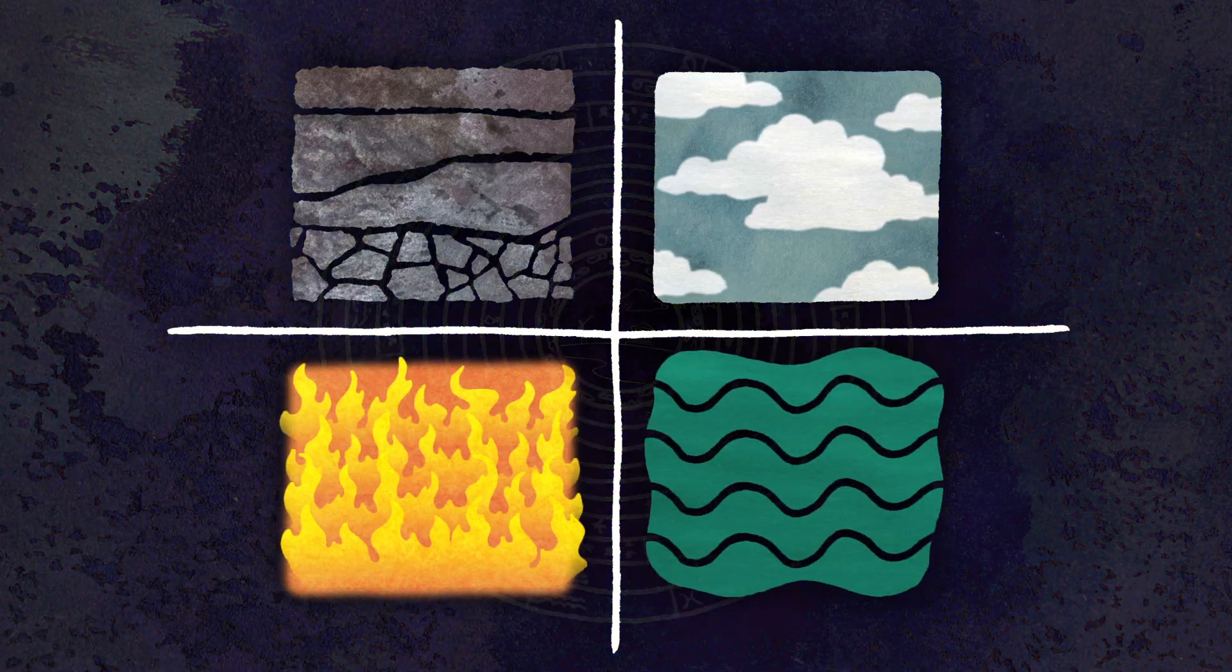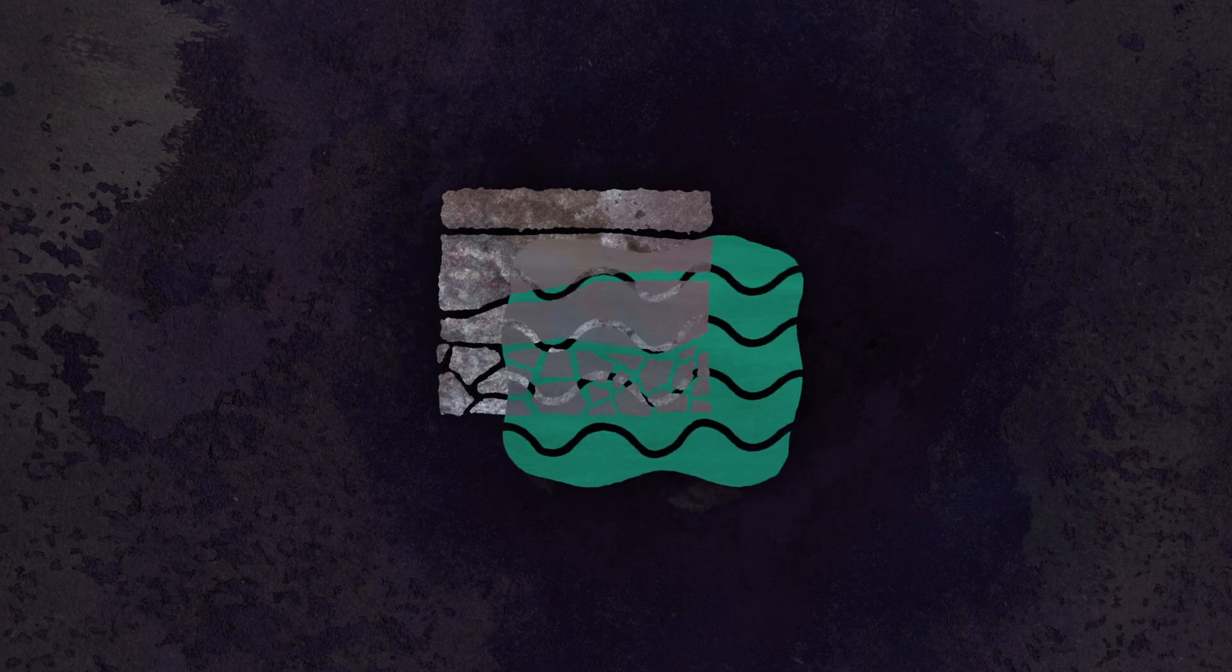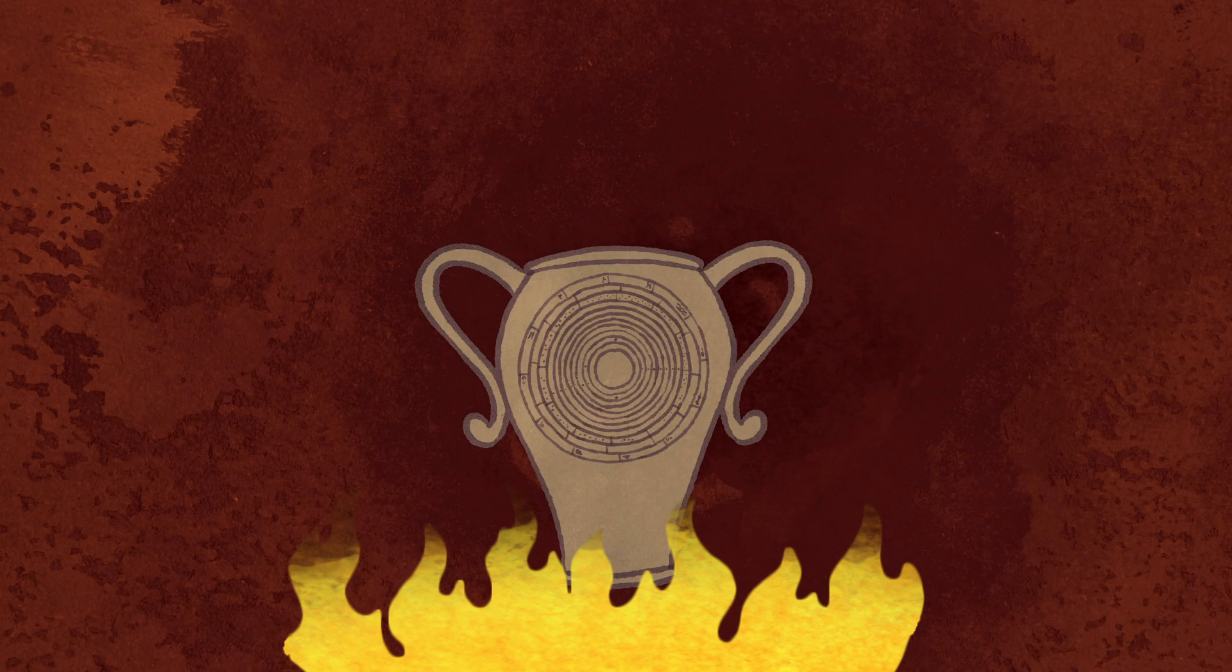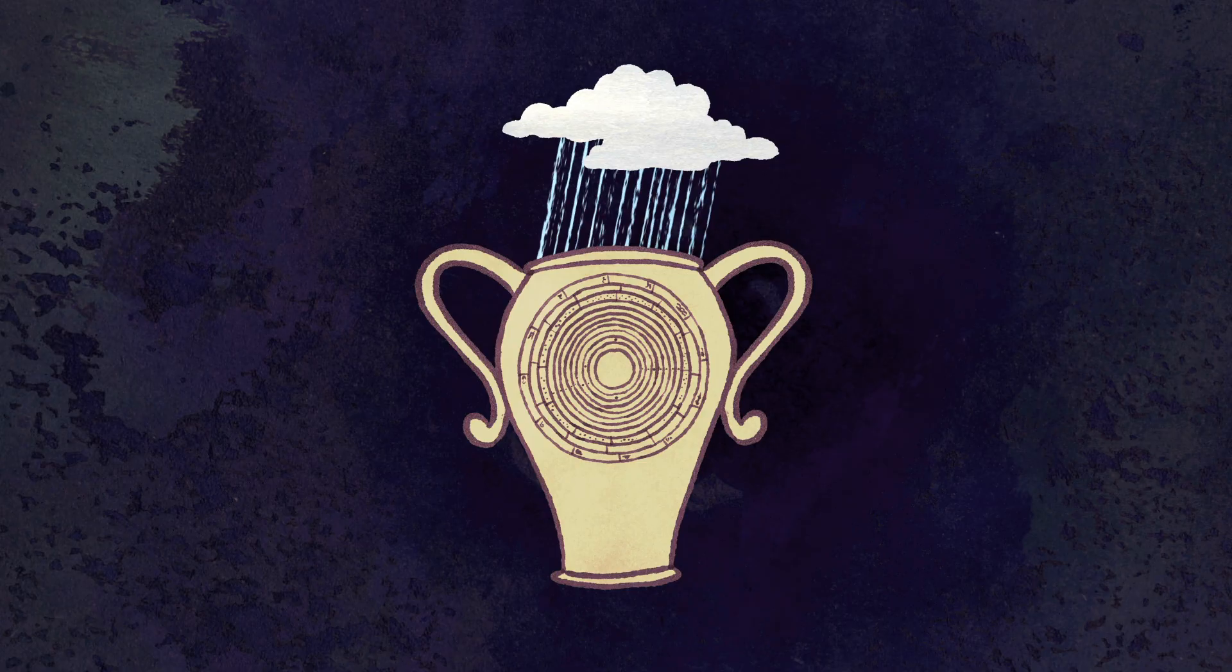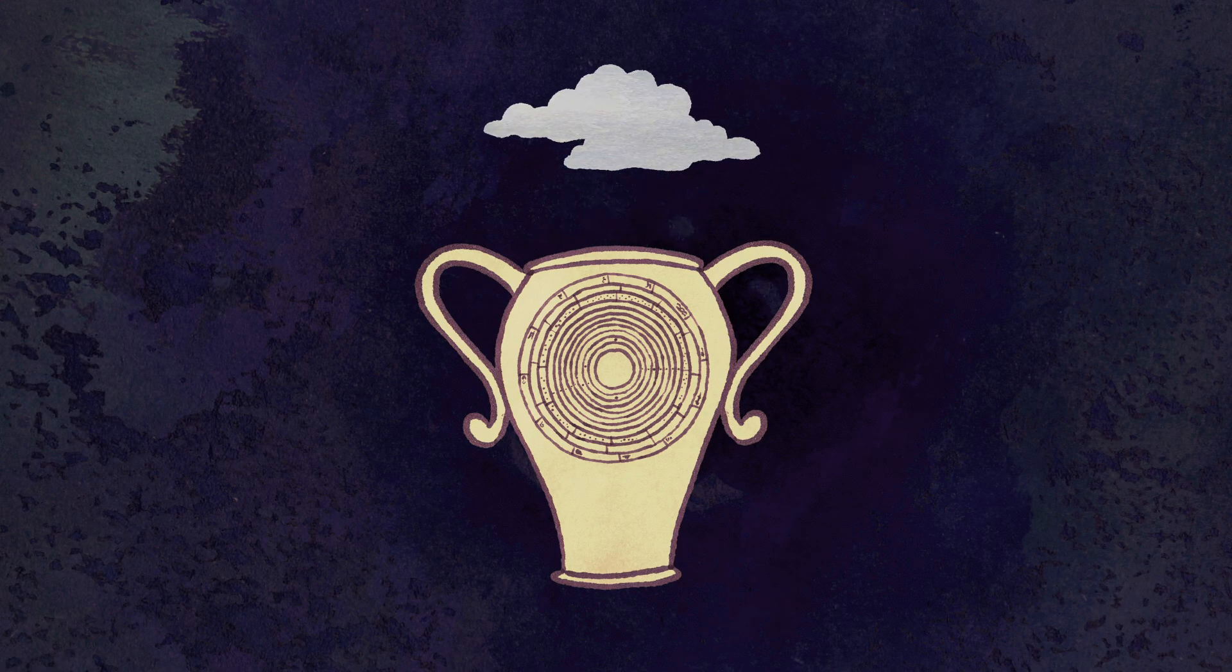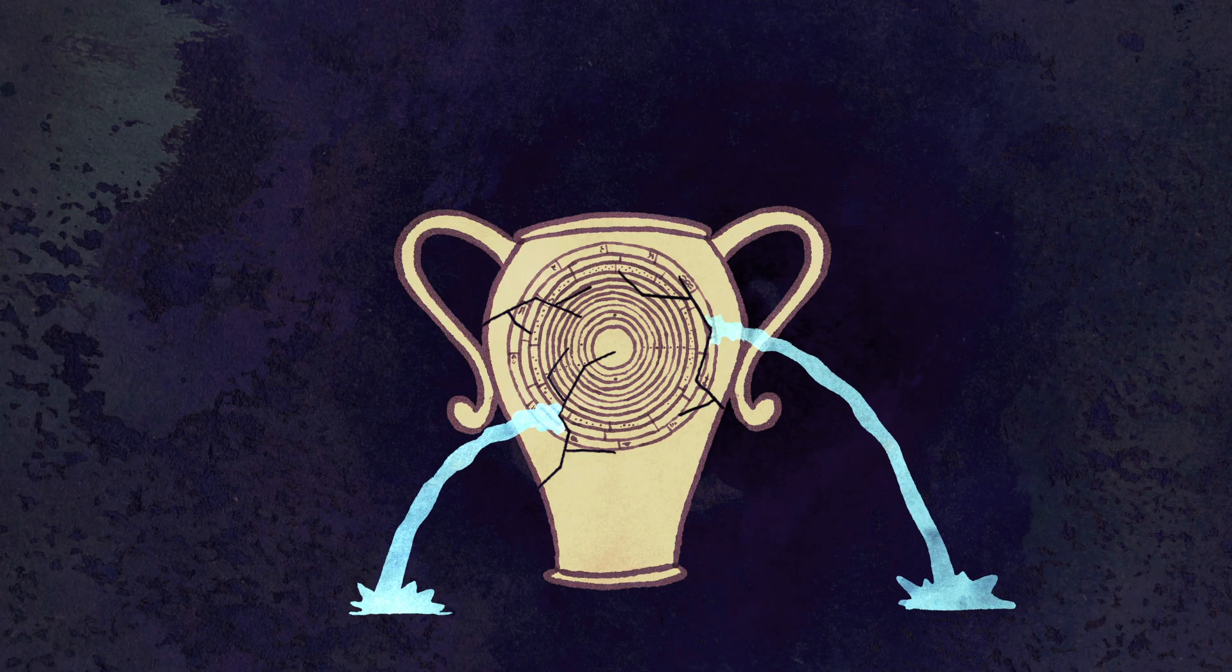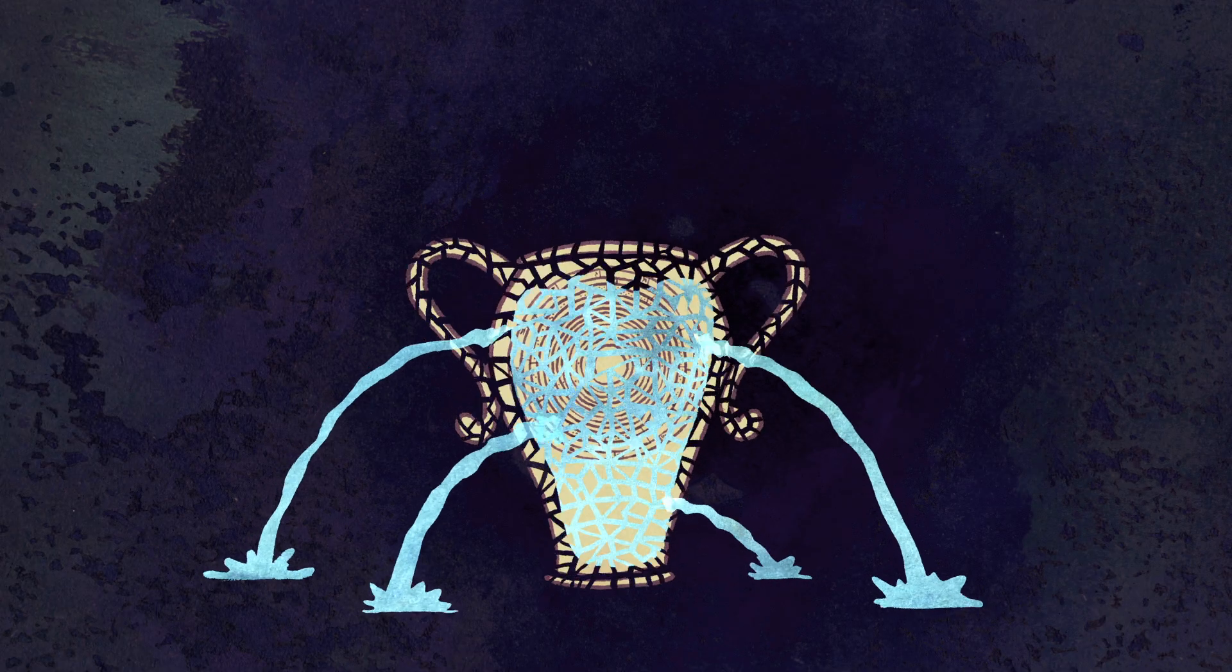As theories go, it's a beautiful one. It has simplicity and elegance. It says that by combining the four basic elements in different ways, you can produce all the wonderful diversity of the universe. Earth and fire, for example, give you things that are dry. Air and water, things that are wet. But as theories go, it had a problem. It didn't predict anything that could be measured. And measurement is the basis of experimental science. Worse still, the theory was wrong.